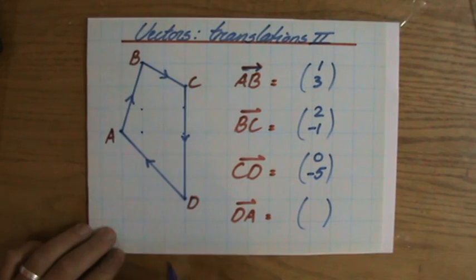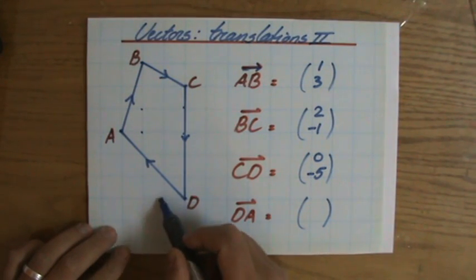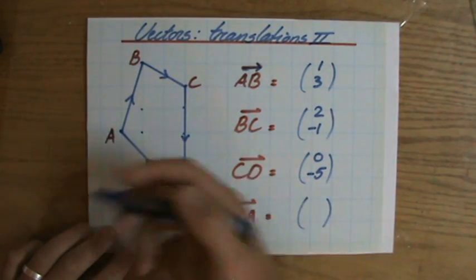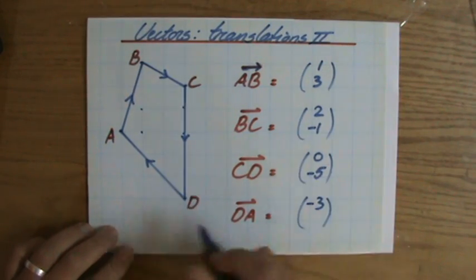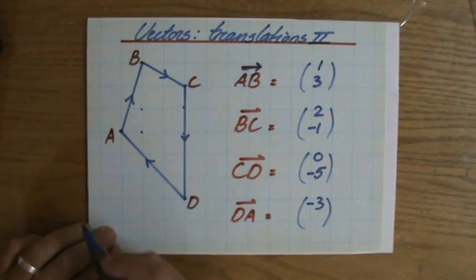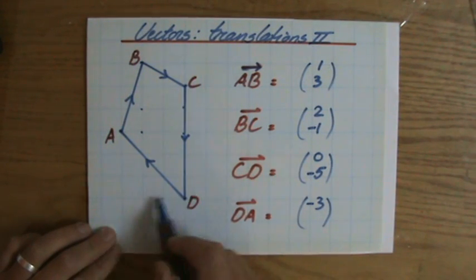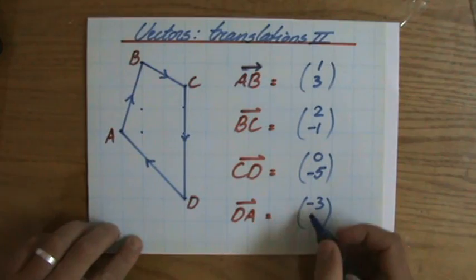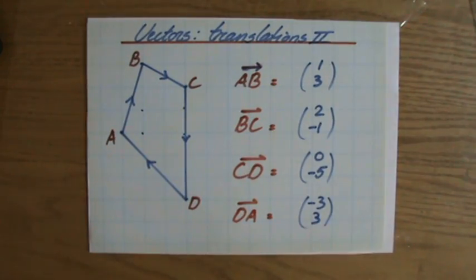From D to A, horizontally, one, two, three, but now I'm going to the left, so minus three. Because to the right is positive, like on a number line, to the left is negative. And then up, it's one, two, three, so that is a positive three.